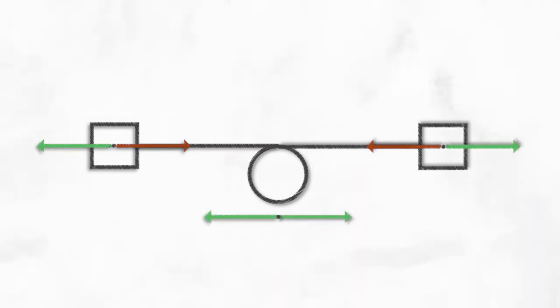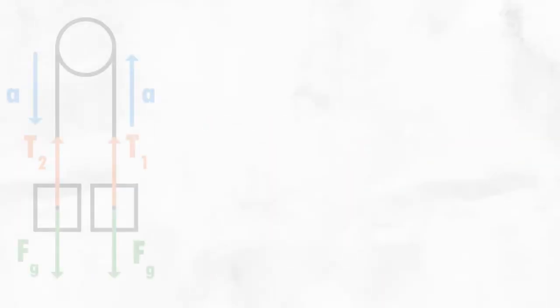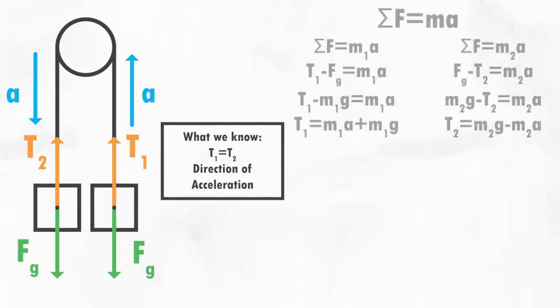And applying Newton's third law, we see that this means that the tension forces exerted by the string on the masses are also equal in magnitude, but opposite in direction. Alright, it's equation time. Using Newton's second law, we can set up equations for the net force on each mass and solve both for the tension.